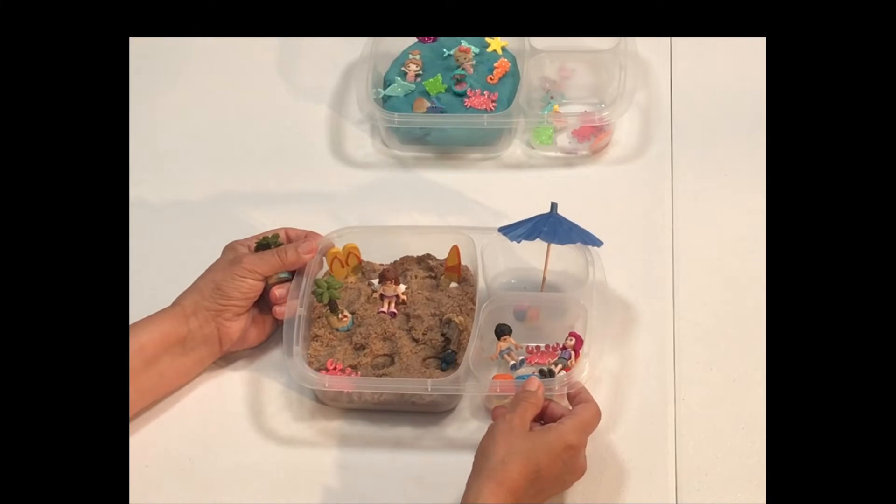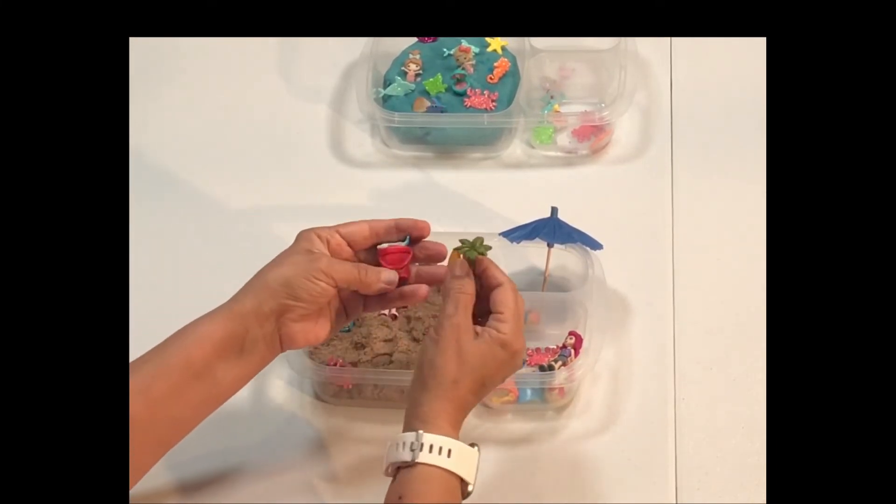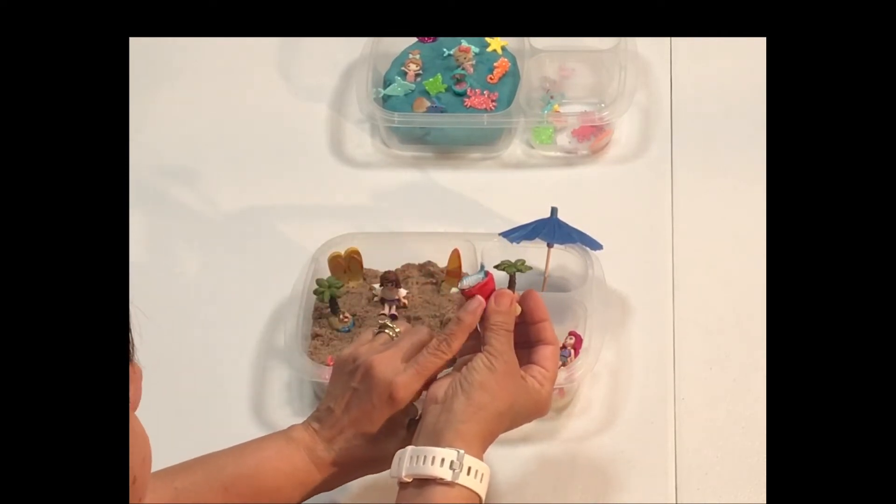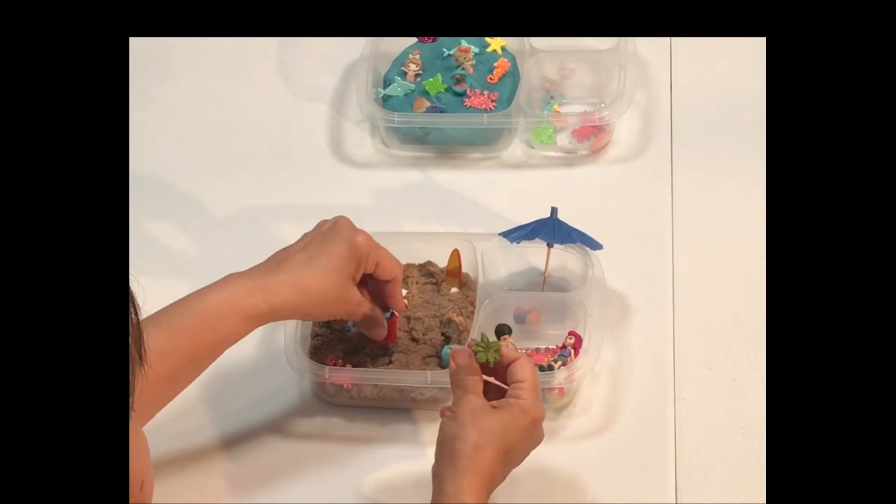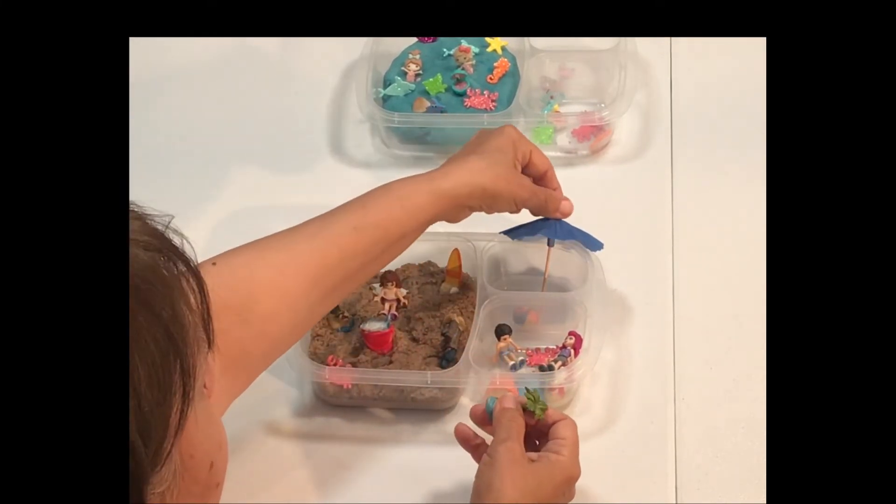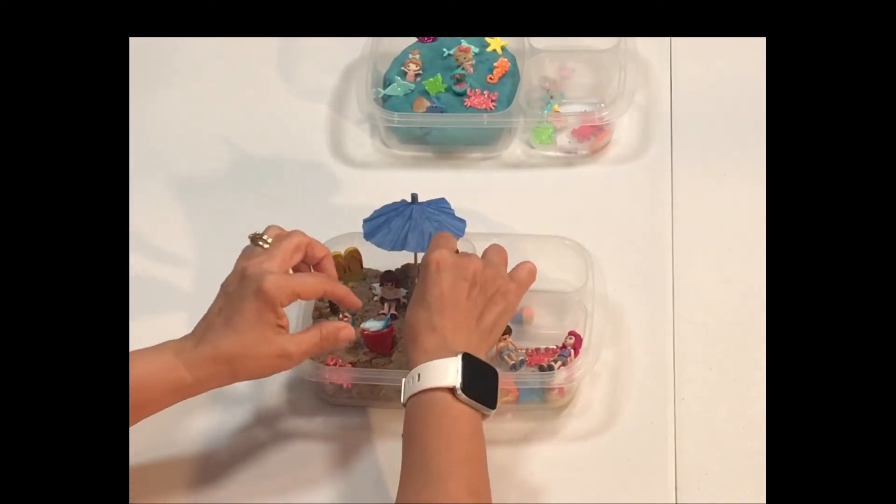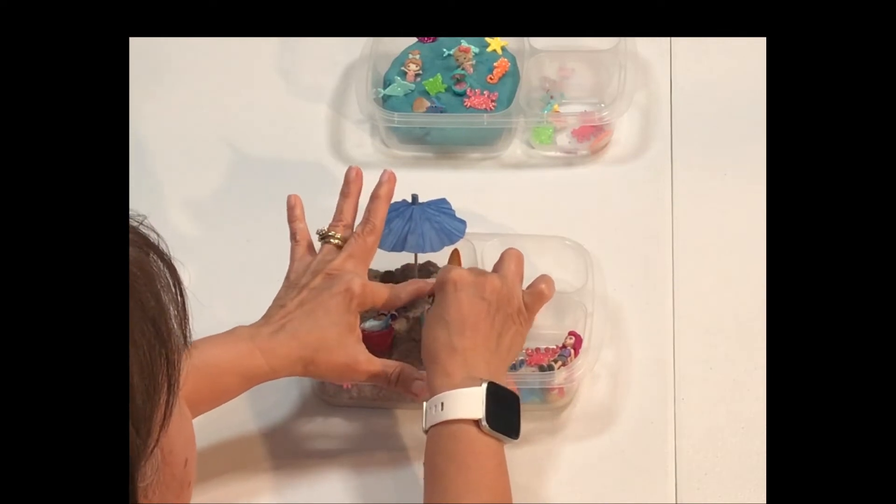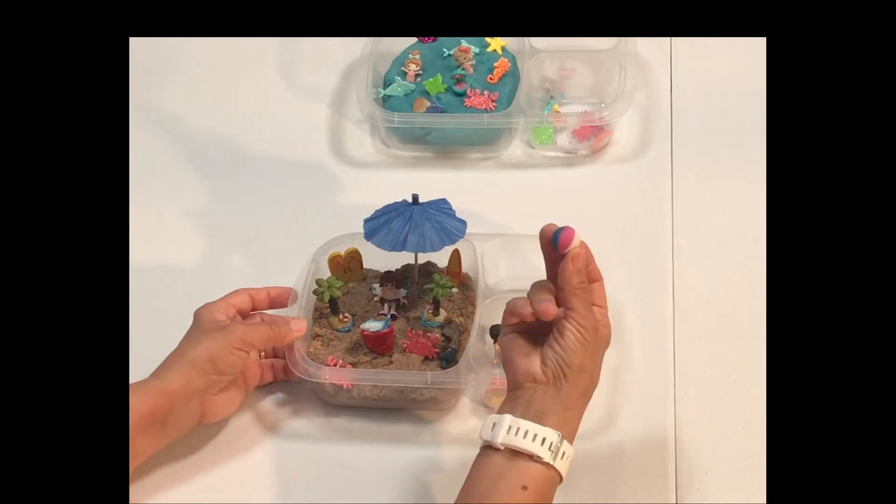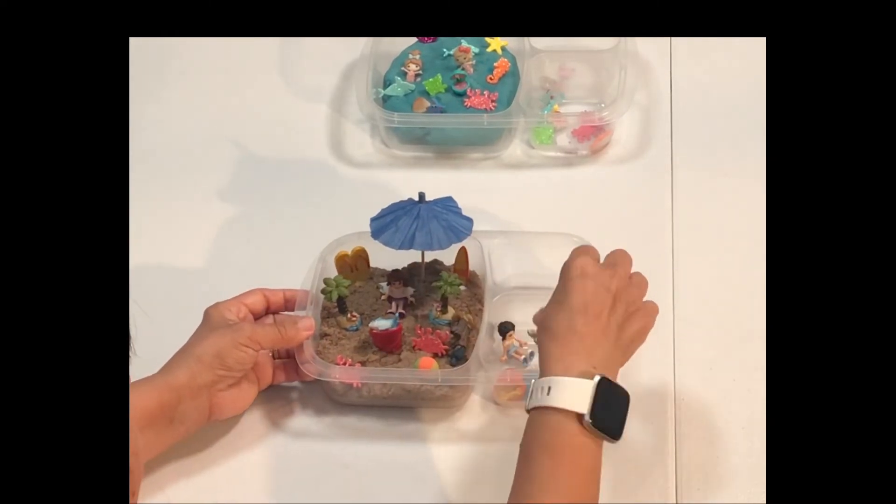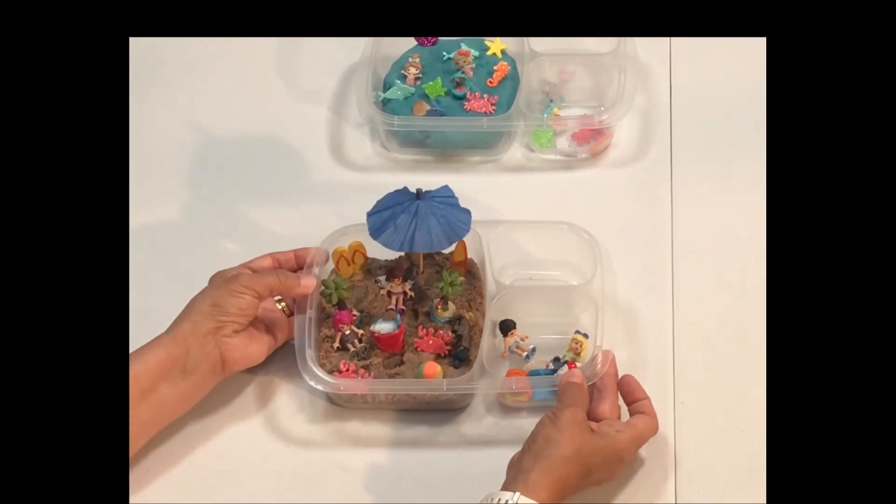For this activity box, I'm using some kinetic sand and I have some of these. I think I got like six of these in a package from Dollar Tree. I have a little umbrella, the little palm tree, some stickers. Just lots of tiny things that my grandson is just going to have a great time playing with this and putting it all together.